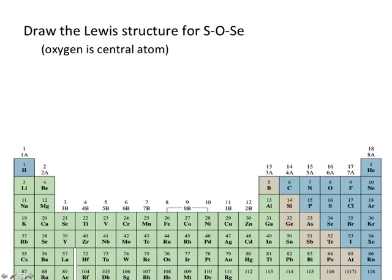So to start, now that you know how to draw Lewis structures, try drawing the Lewis structure for this one. Kind of a weird molecule that I made up to prove a point, but you got sulfur, oxygen, selenium. Oxygen's in the center. I gave you the skeletal structure. Pause the video. Practice. Try drawing the Lewis structure for this.